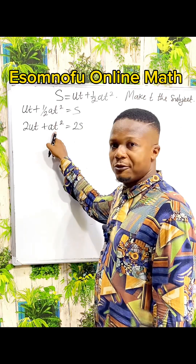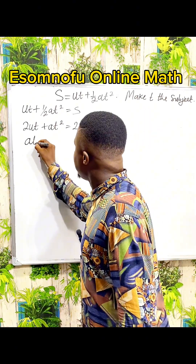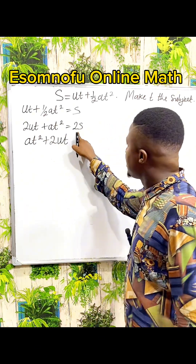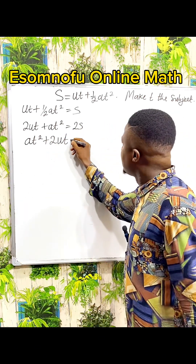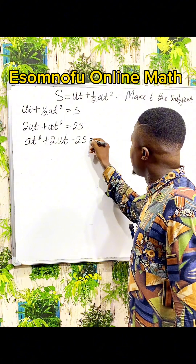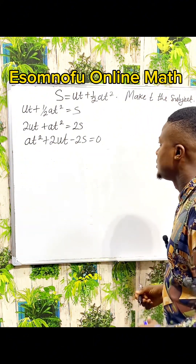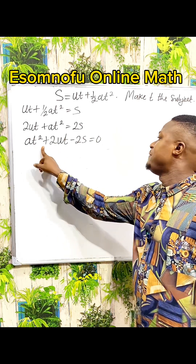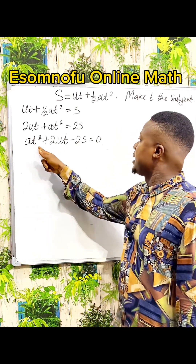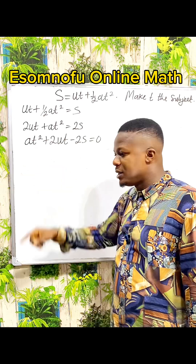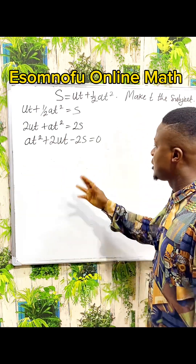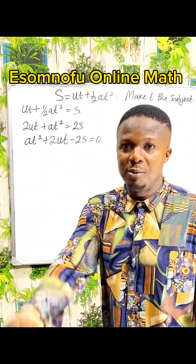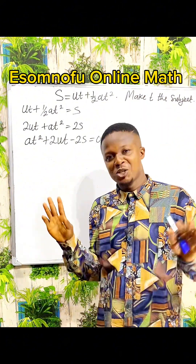Let me write the term with the power of 2 first. So I have aT squared plus 2UT, and this minus 2S, everything equal to zero. Now, even if you want to make T the subject directly by factoring out T, you can try — but if you bring out T, then T squared leaves T behind, so it's difficult to factor out T cleanly.